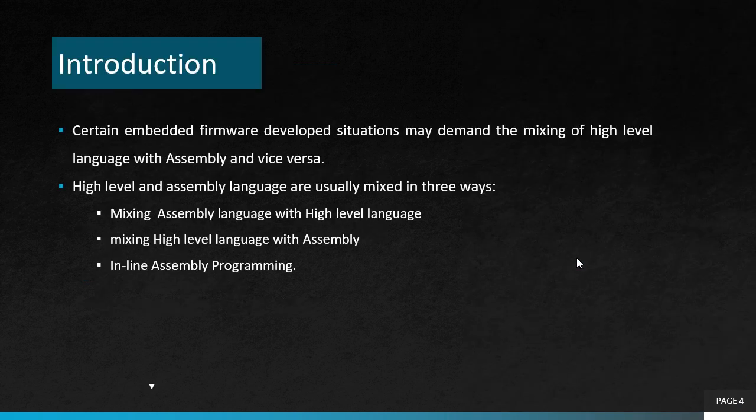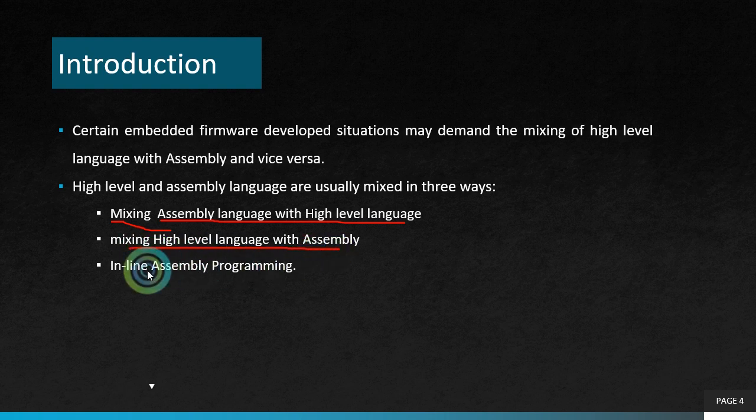Let's look at why we should do that. There are certain situations which demand mixing high level with assembly language or assembly with high level language. There are three types of language: high level language, assembly language, and machine language. Machine language is closest to the machine, high level language is more English-like, and assembly language uses symbols and is closer to machine language than high level language. There are three methods: mixing assembly with high level, mixing high level with assembly, or inline assembly.